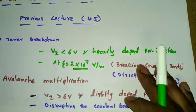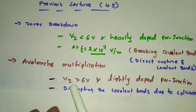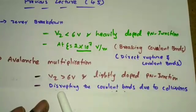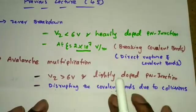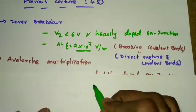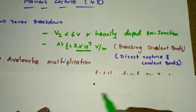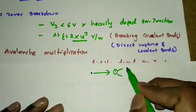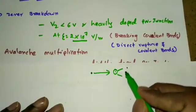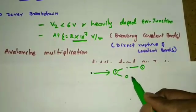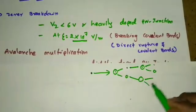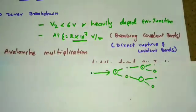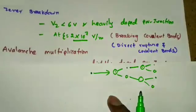Avalanche multiplication occurs when the Zener diode voltage is greater than 6 volts and the p-n junction is lightly doped. The mechanism here is disruption of covalent bonds due to collisions in the crystal. An electron acquires energy from the applied field, accelerates, collides with a crystal ion generating an electron-hole pair. Those generated carriers again collide, generating more electron-hole pairs in an accumulative process, producing current.